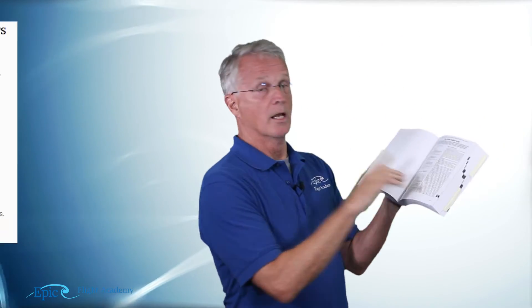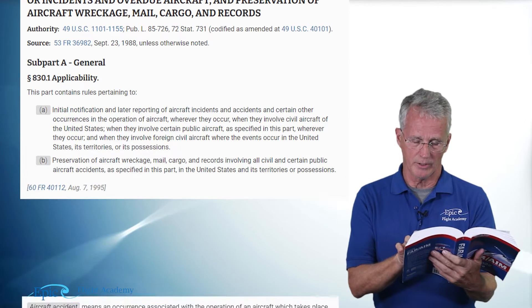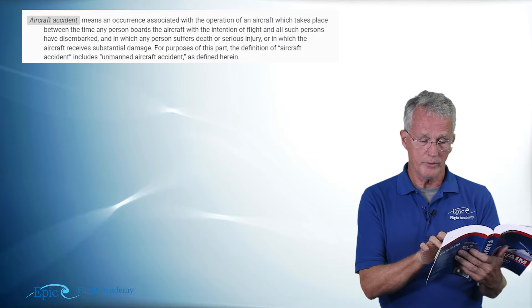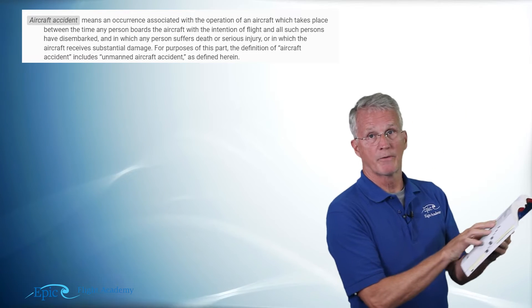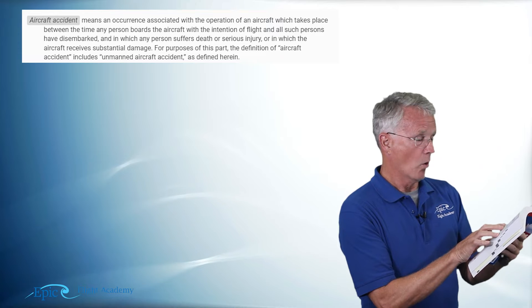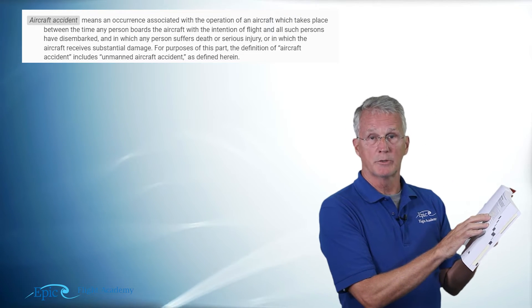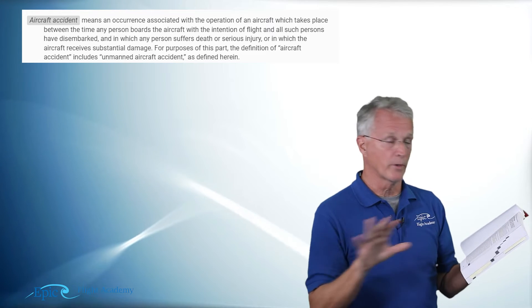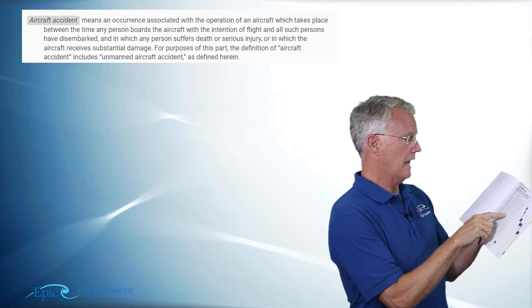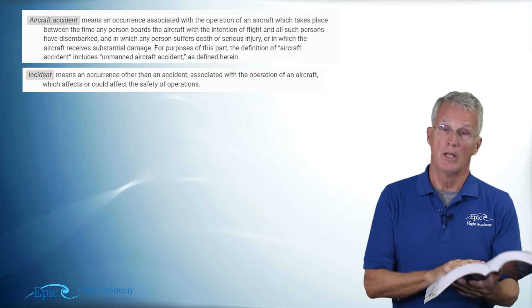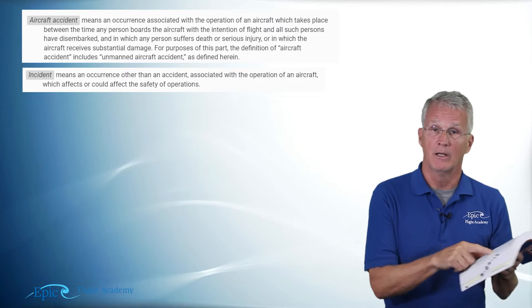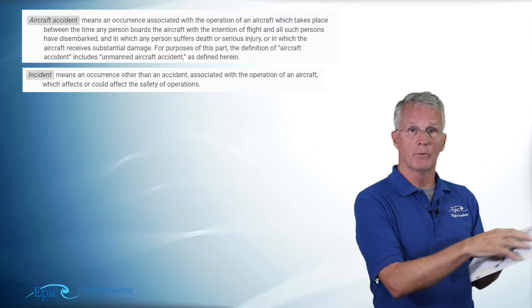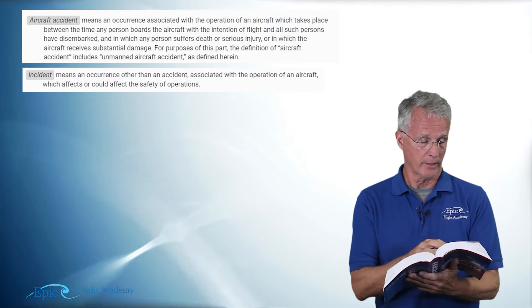In Subpart A, under Definitions: an aircraft accident means an occurrence associated with the operation of the aircraft in which any person suffers death or serious injury, or in which the aircraft receives substantial damage. An incident is anything other than an accident that could affect the safety of operations. These definitions in Subpart A are critical and will come back to us in just a moment.